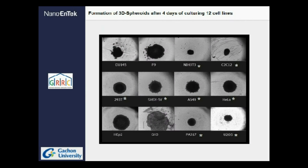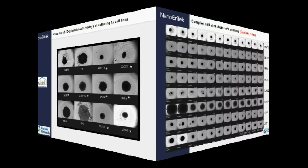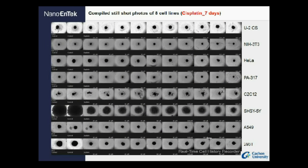In order to perform cisplatin cytotoxicity against 3D spheroids, we tested 12 cell lines for their capability of forming 3D spheroids. From them, 8 cell lines indicated with stars were selected for further study, as you can see on the right side. Among them, we tested a cisplatin concentration gradient from 20 µmol to 300 µmol.